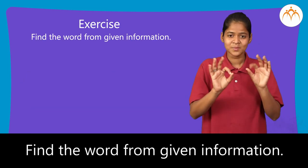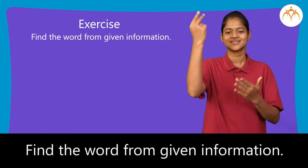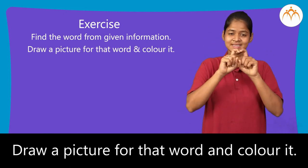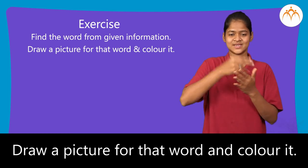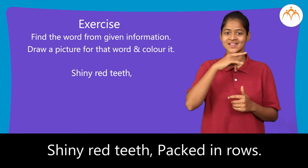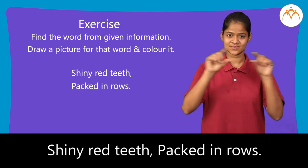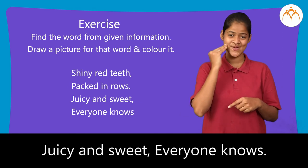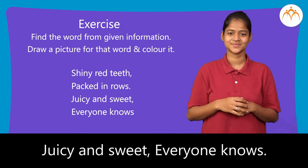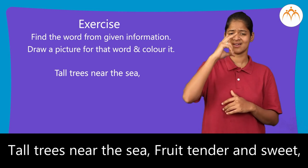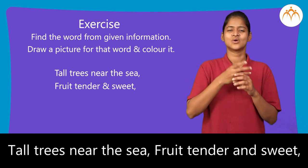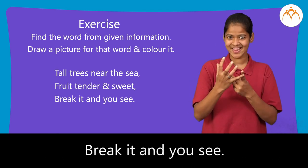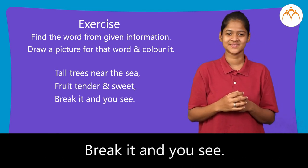Find the word from the given information. Draw a picture for that word and color it. Shiny red teeth, packed in rows, juicy and sweet, everyone knows. Tall trees near the sea, fruit tender and sweet, break it and you see.